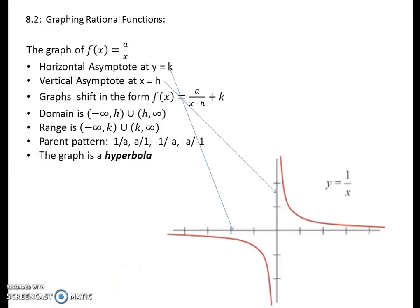Welcome to a video on 8.2 graphing simple rational functions with h and k shifts. These rational functions take on a ratio of polynomials. So we will have a polynomial in the top and a polynomial in the bottom of our function.